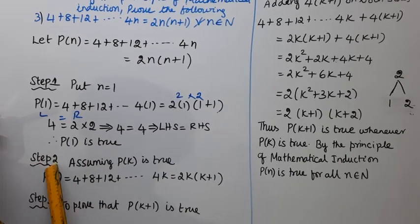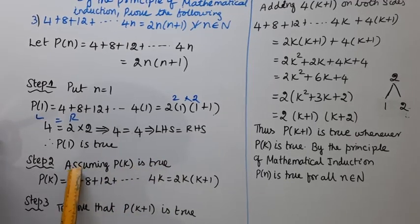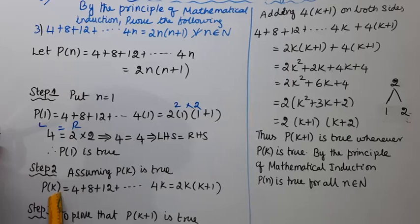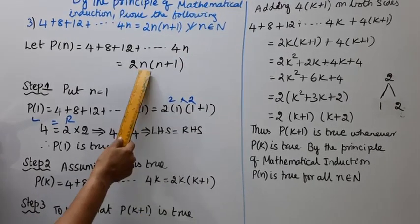Step 2: Assuming P(k) is true. P(k) = 4 + 8 + 12 + ... + 4k = 2k(k + 1).